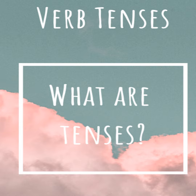By tenses, we mean the relationship between our concept of time and the forms of verbs. Time can be seen basically in terms of present, past, and future. This division corresponds to the present, past, and future tenses. Each of these tenses has the simple, the perfect, the progressive, and the perfect progressive tenses.